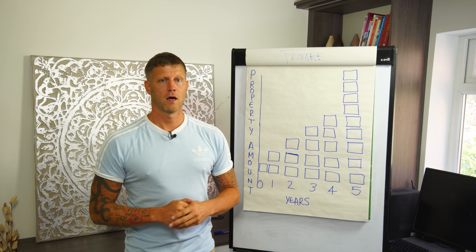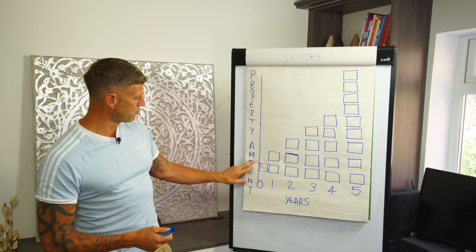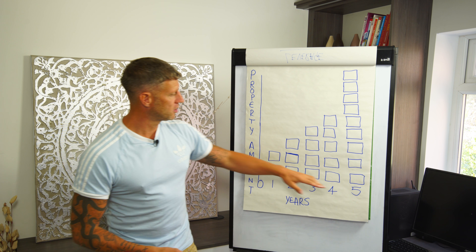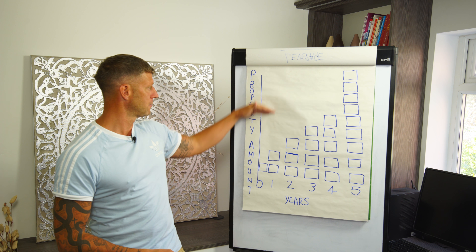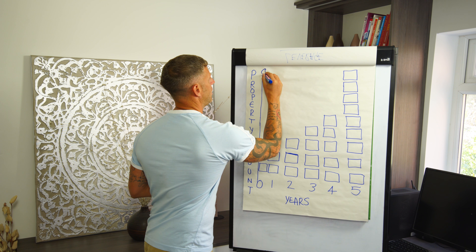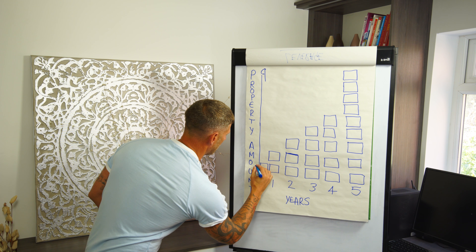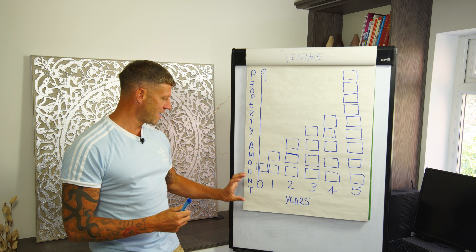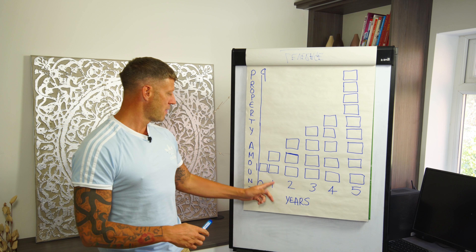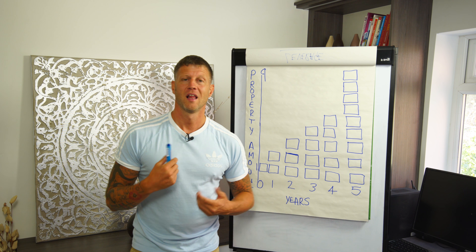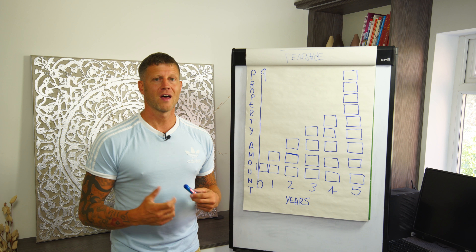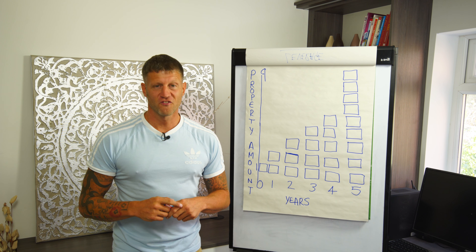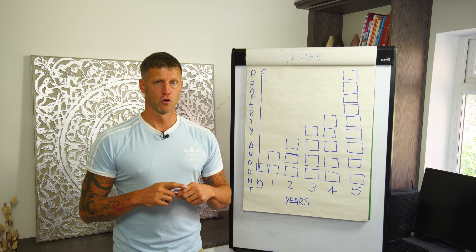So this model here — we've got property amount down this side, from one property up to nine. And then along this side we've got the years, starting off with zero, which is starting off now, and then one year's time, two years time, three, four and five. We're going to show you how quickly that can build up when you've got more than one property and you're getting inflation off that.